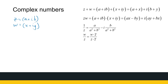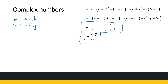We looked at the multiplicative inverse, and now we're going to look at an easier way to deal with that concept — one I'll show you shortly. It comes from a property of the complex conjugate. The complex conjugate of Z is A minus iB, and for W it is X minus iY. We're going to use these formulas in actual examples.